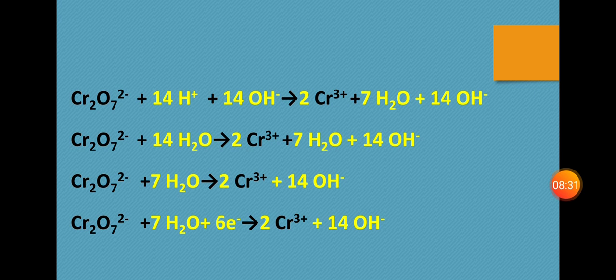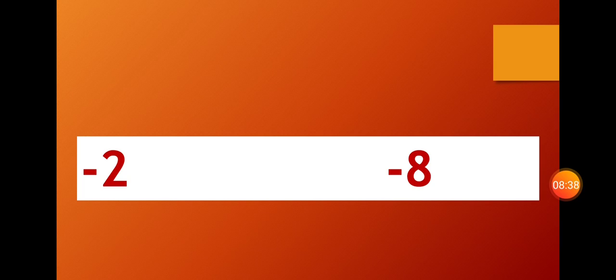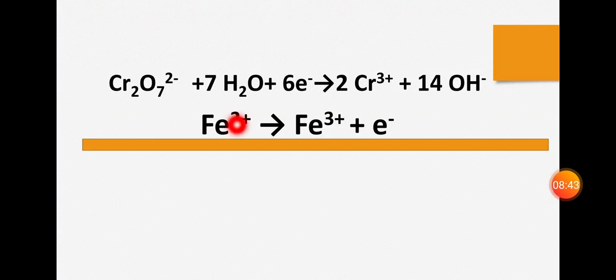Now we add 6 electrons to the left side. For the first half, Fe2+ gives Fe3+ plus electron - that's the second half-reaction. We multiply by 6.